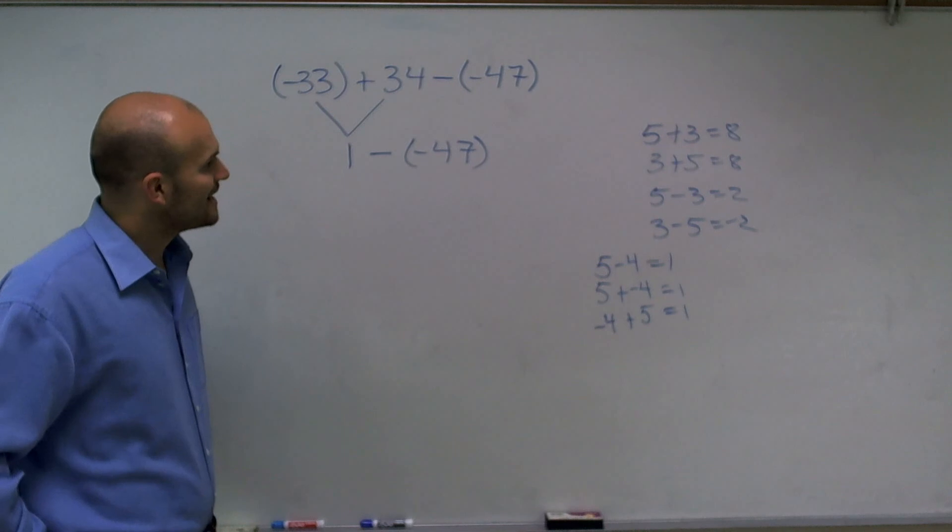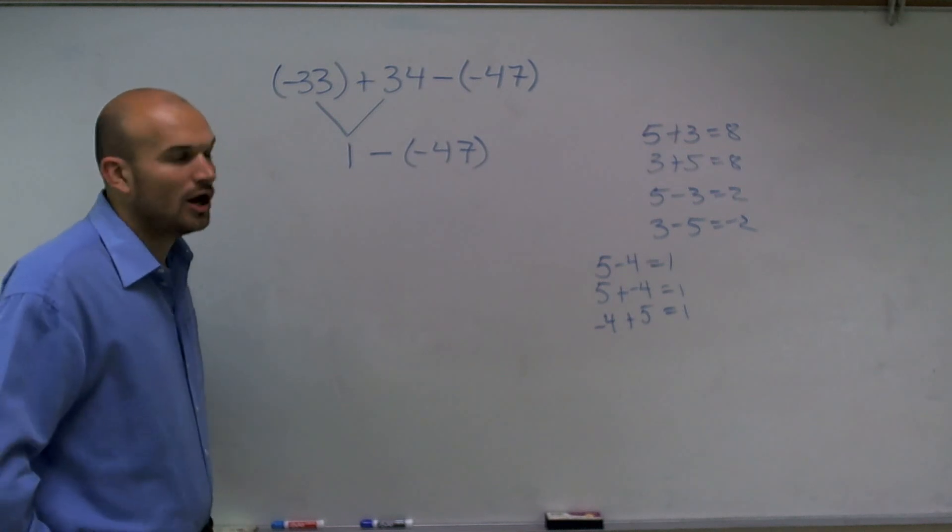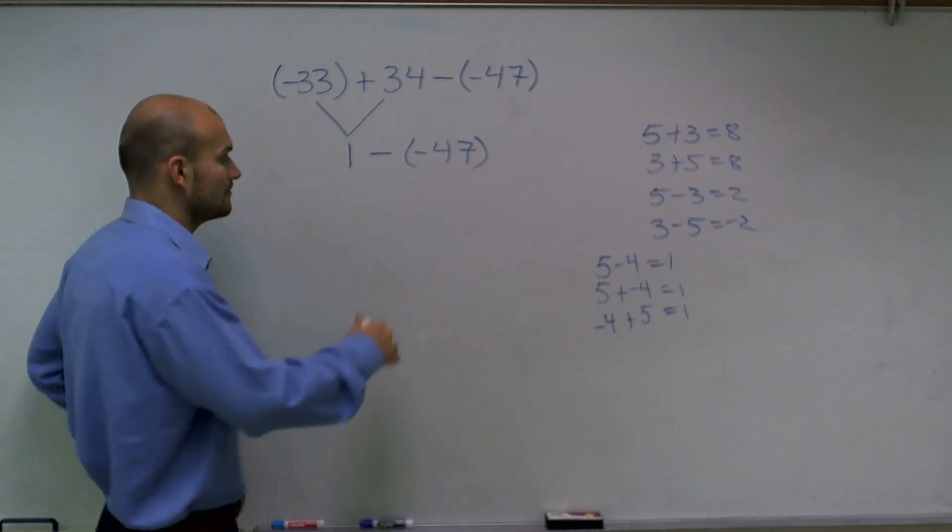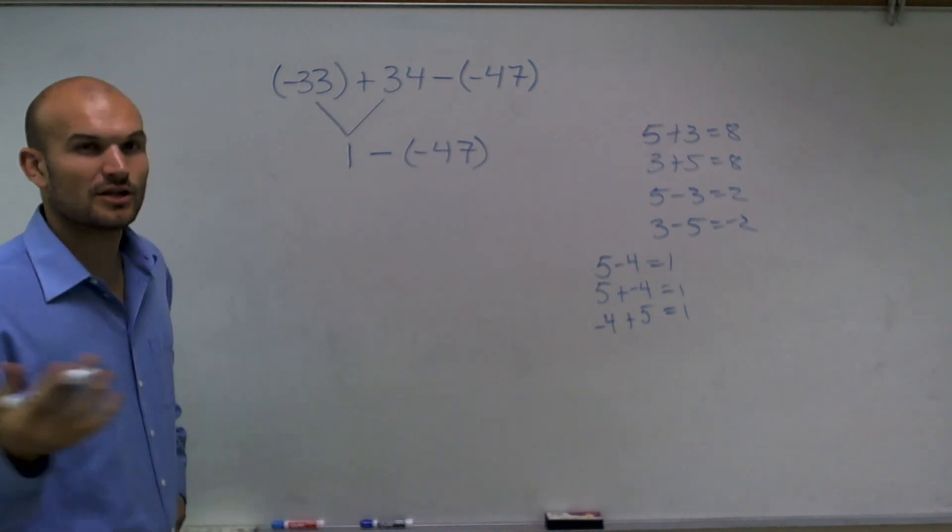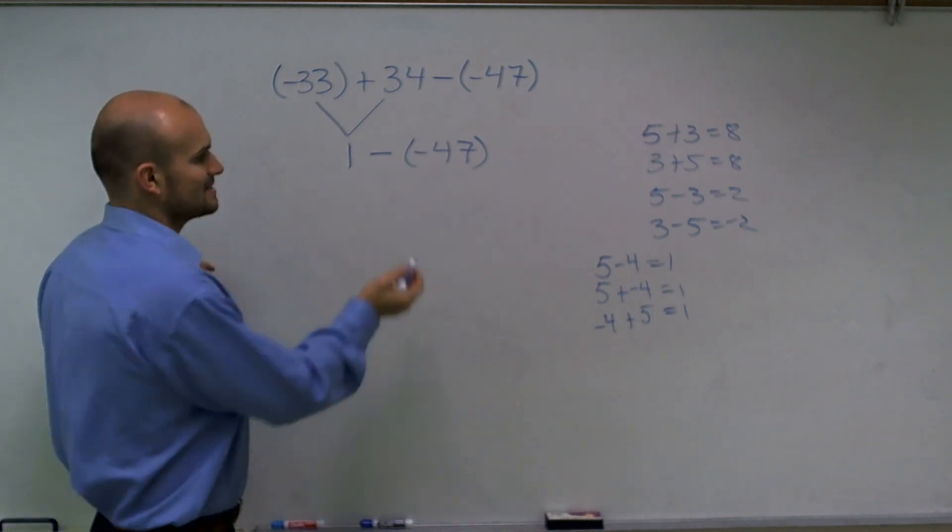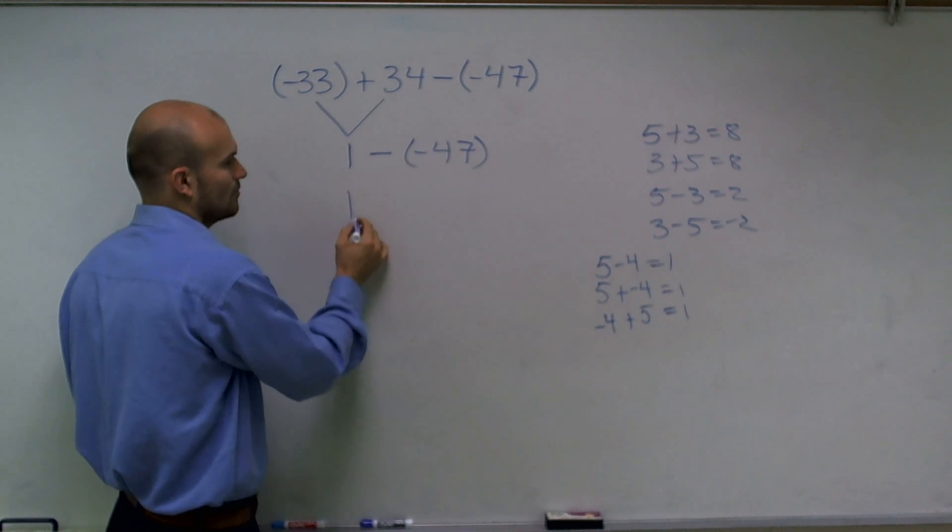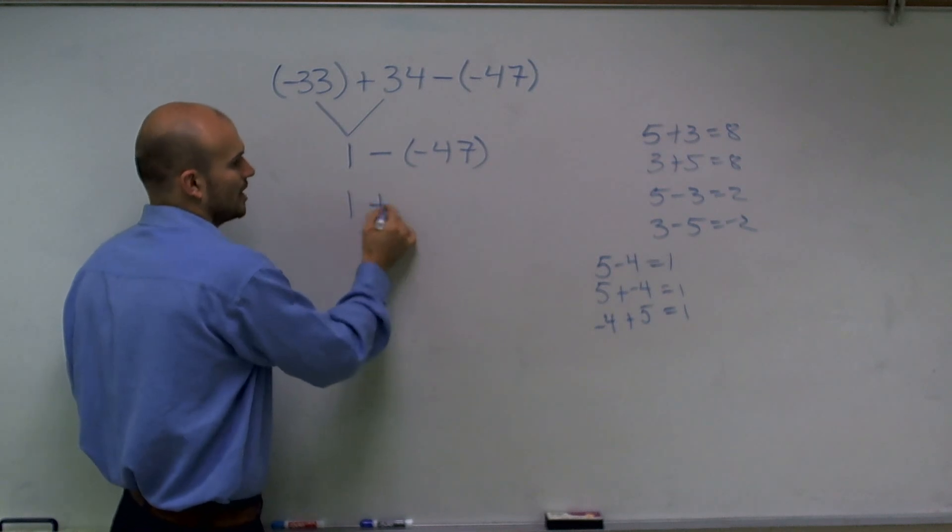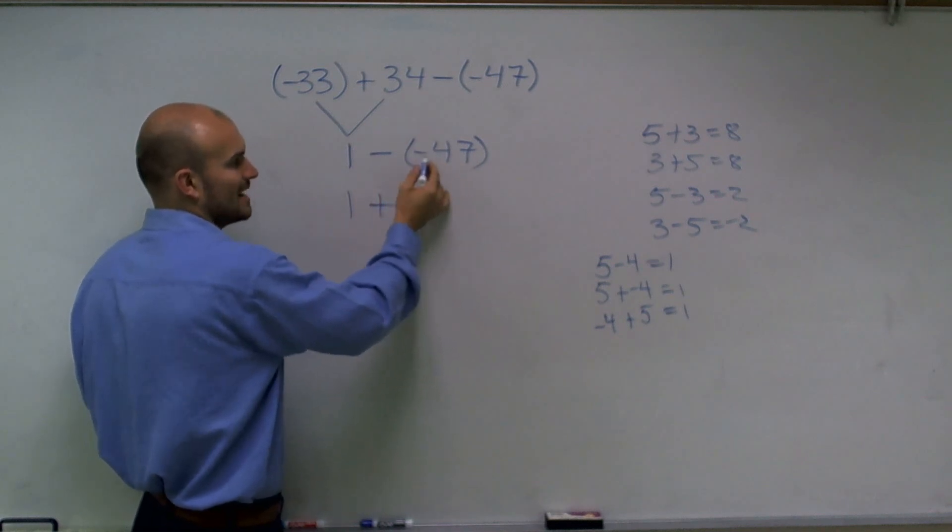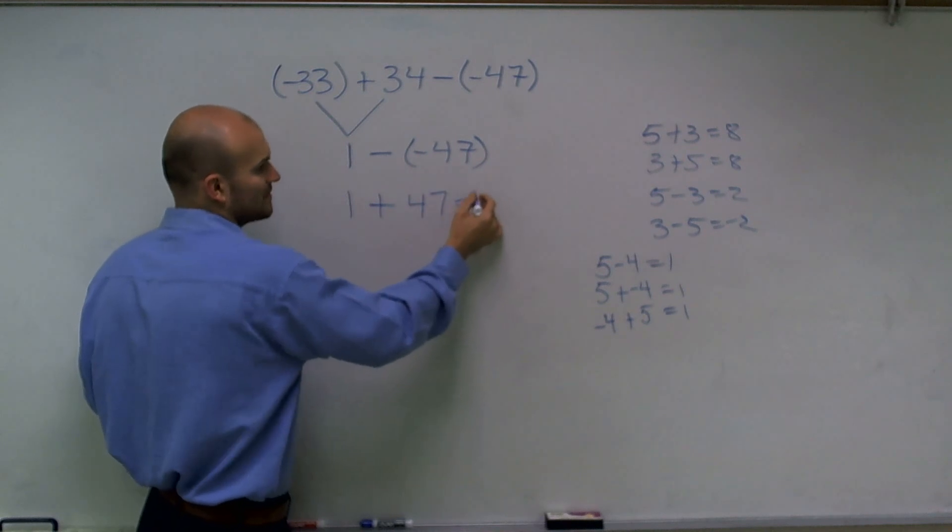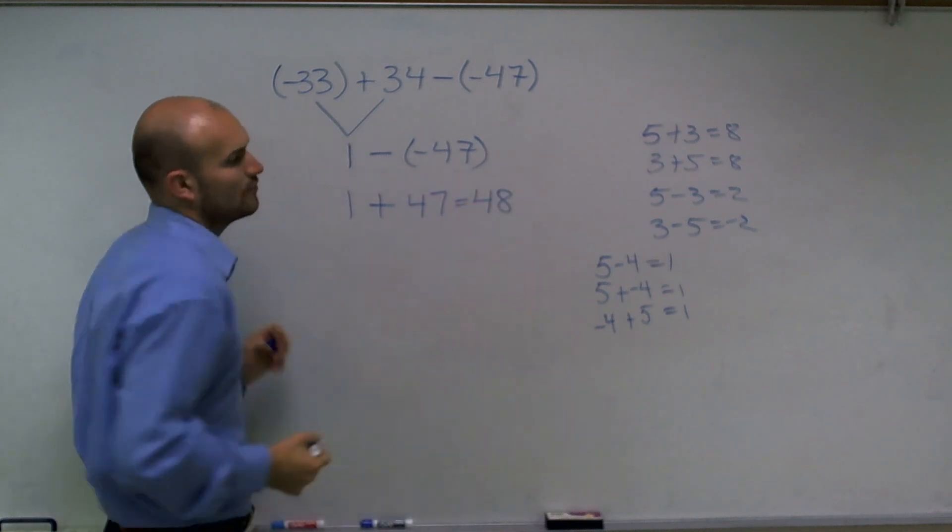So 1 minus a negative 47 is what we call a double negative. So therefore, what I can do, and the other way to think about this is let's say you want to make this an addition problem. So what would you do? You'd make it a plus, so you change it to a plus, and then the opposite of that sign, which would be a negative, negative, negative would make it a positive. So it would be plus 47, which equals 48.